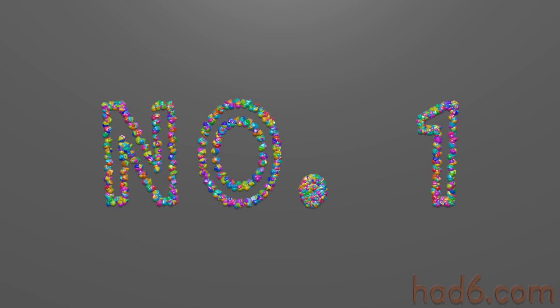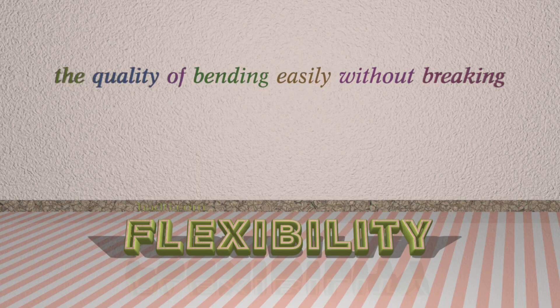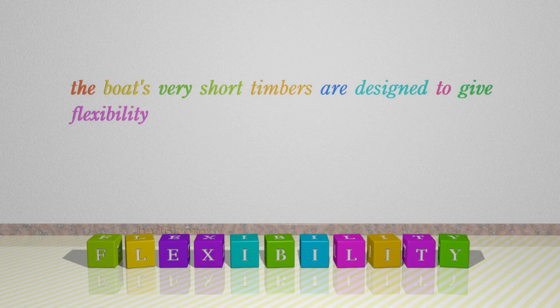Number 1: Flexibility. Which means the quality of bending easily without breaking. Flexibility. For example: The boat's very short timbers are designed to give flexibility.